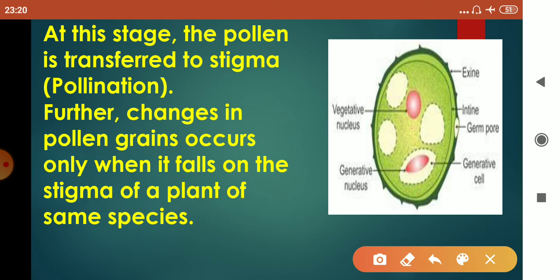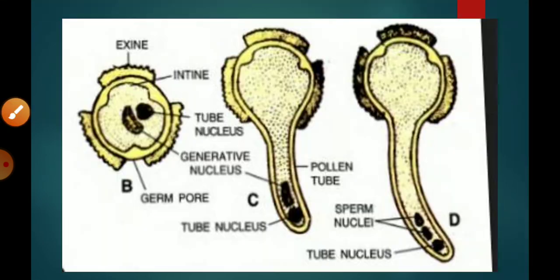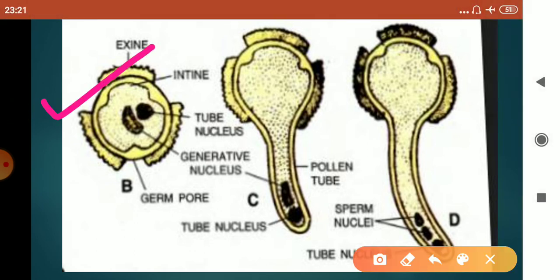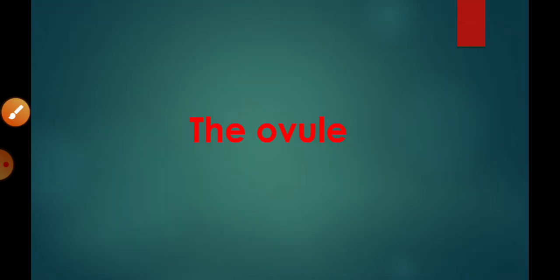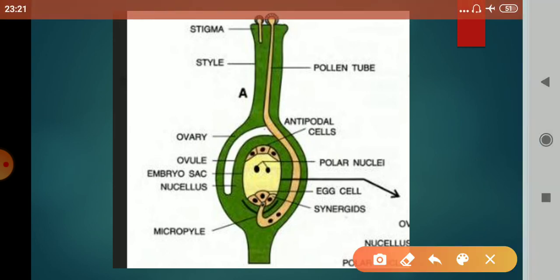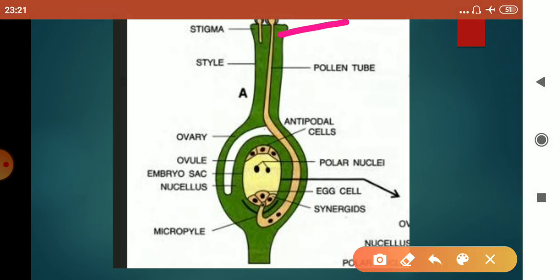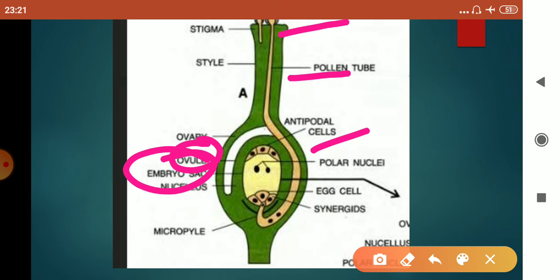Looking at the germinating pollen grain structure: this is very important from an exam point of view. The generative nucleus is forming male gametes, and this is the tube nucleus. The structure of the ovule: this is the female reproductive structure — stigma at top, then style, then ovary. Inside the ovary is the ovule, inside the ovule is the embryo sac. The embryo sac has a nucleus, and there is an opening — the micropyle — through which the pollen tube enters.